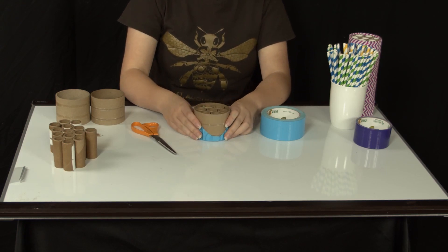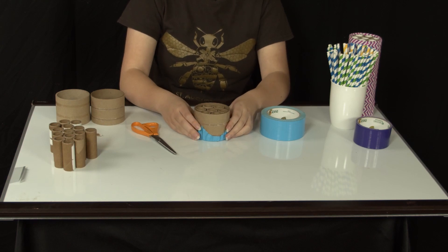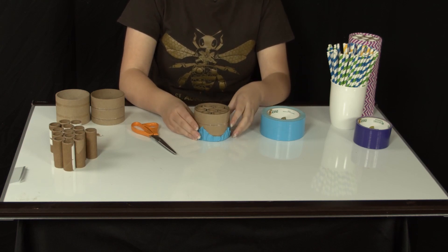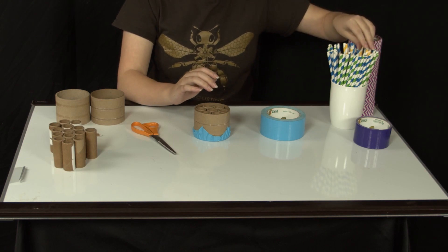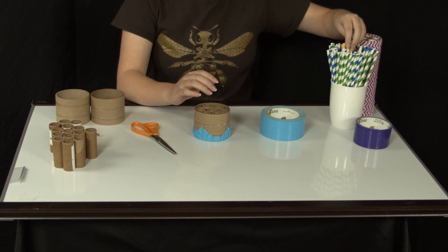Then, put paper straws in every crevice, so there's plenty of places for the leaf cutters to lay their eggs. You can place them randomly or put them in a pattern, like I will.